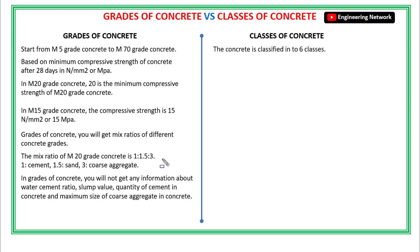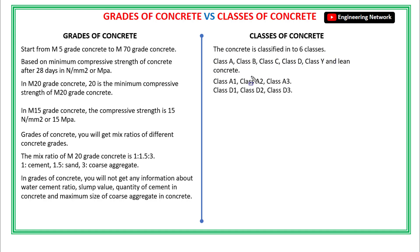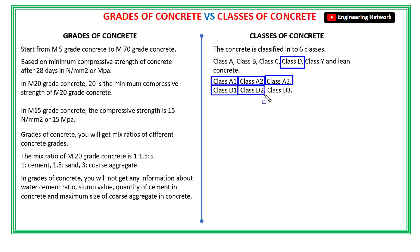The concrete is divided or classified into six classes: Class A, Class B, Class C, Class D, Class Y, and lean concrete. Also, Class A concrete is further divided into three more classes — Class A1, Class A2, and Class A3 concrete. And Class D concrete is further divided into three more classes — Class D1, Class D2, and Class D3 concrete.